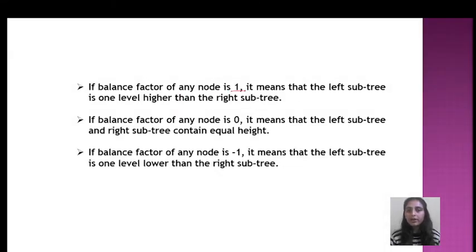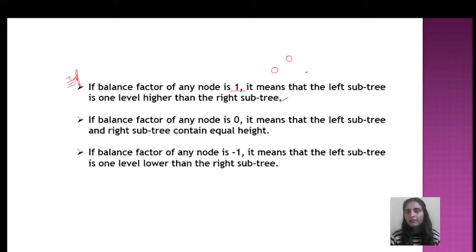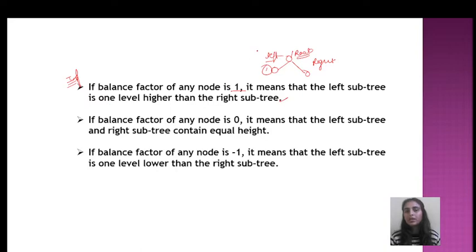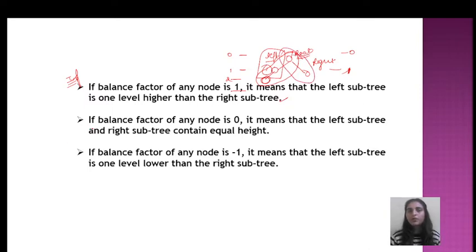If the balance factor of any node is one, it means that the left subtree is one level higher than the right subtree. For example, if the left side has three levels — level zero, level one, and level two — and the right side has only two levels, then the balance factor will be one.